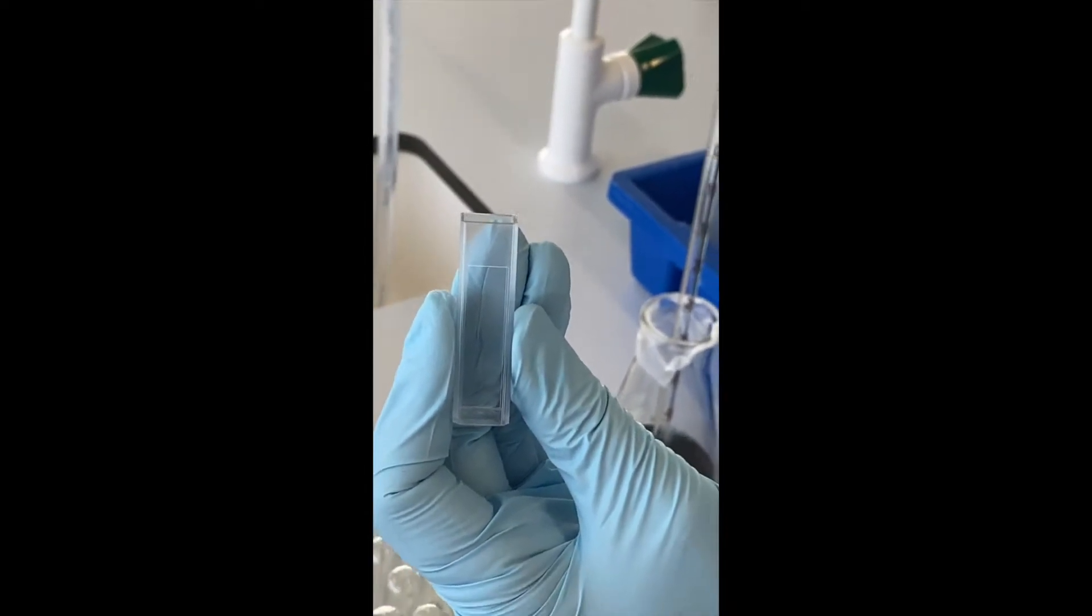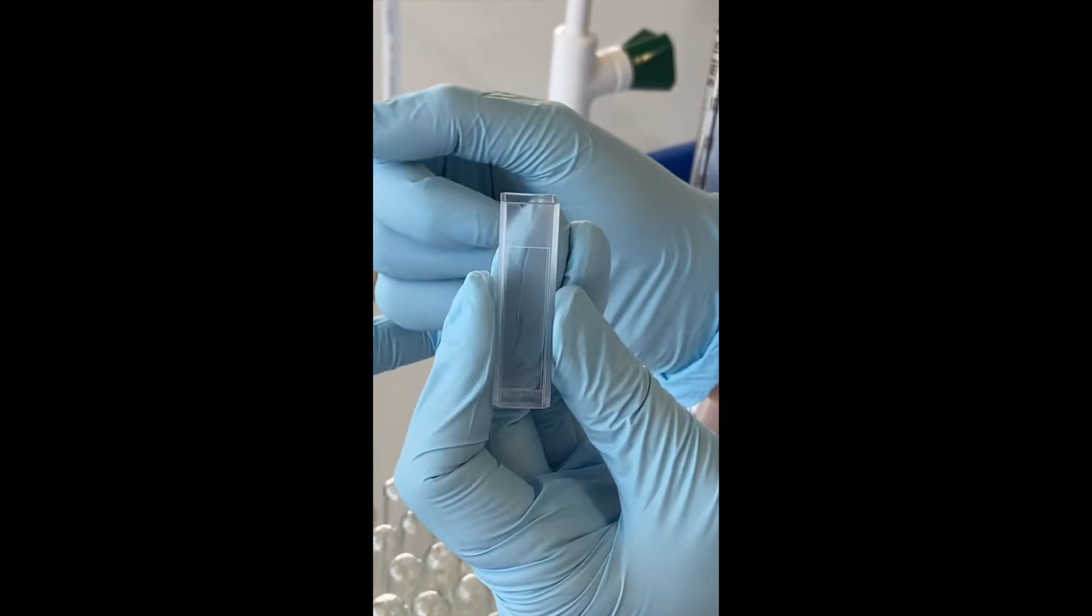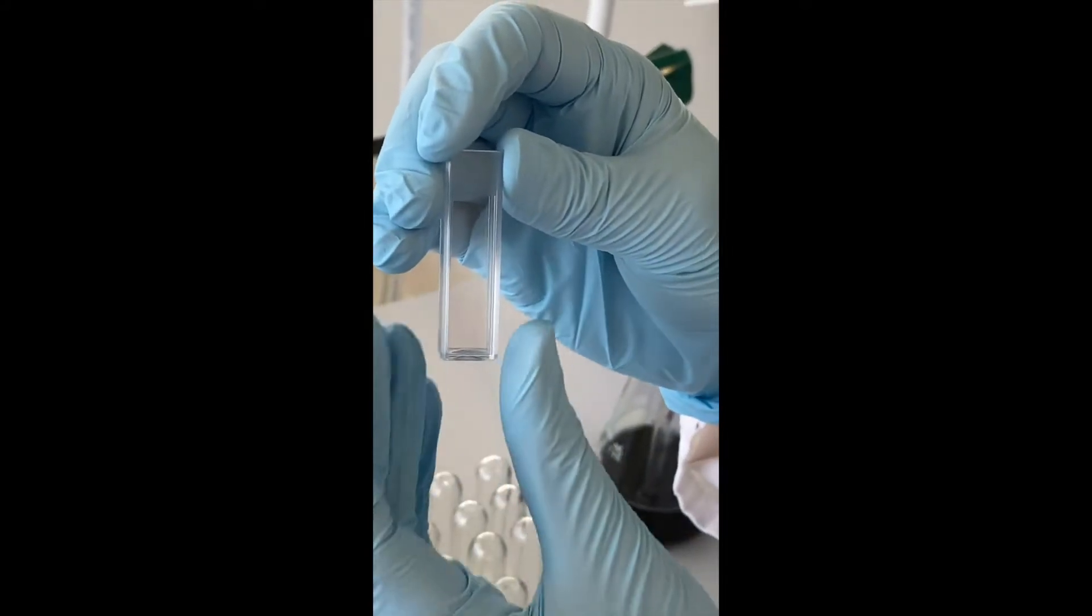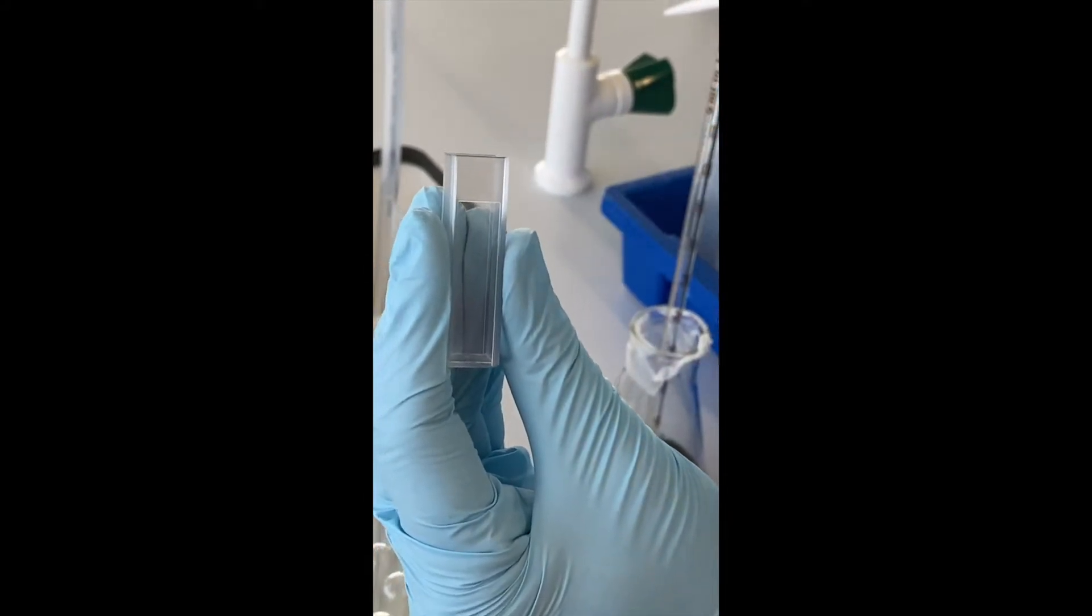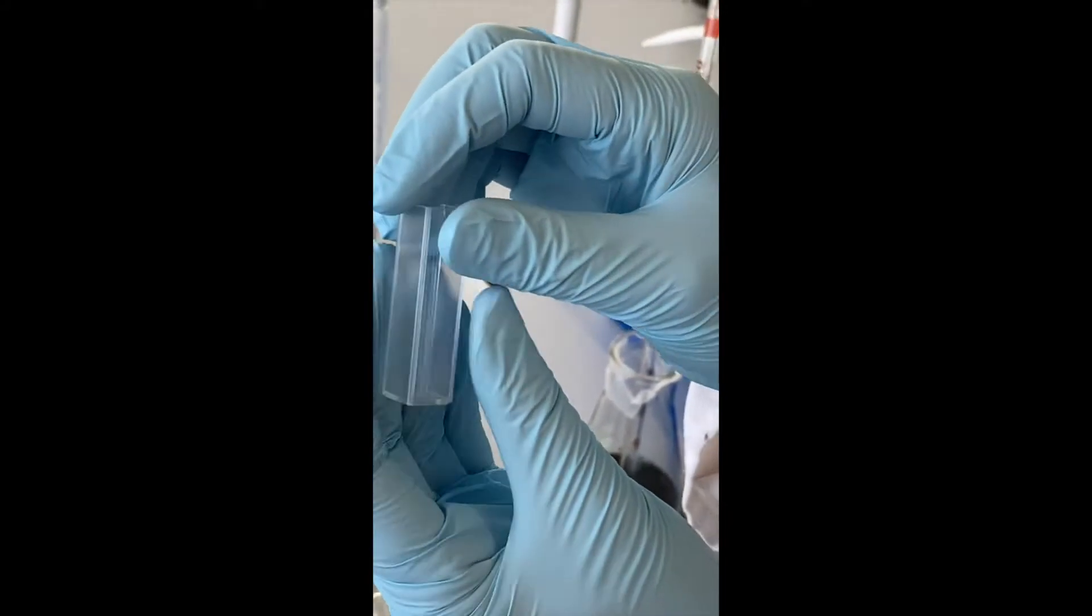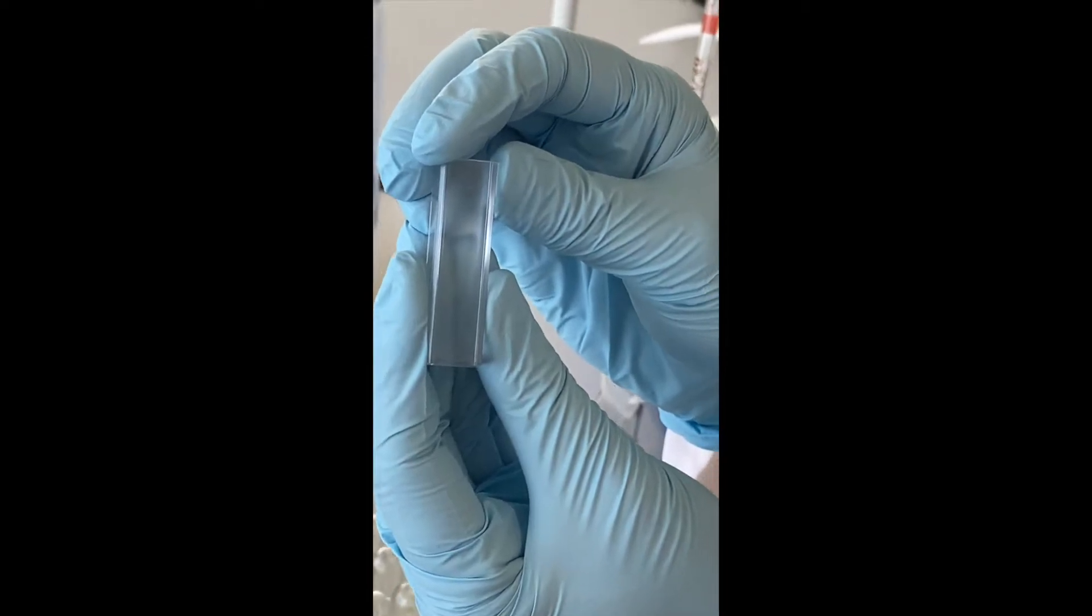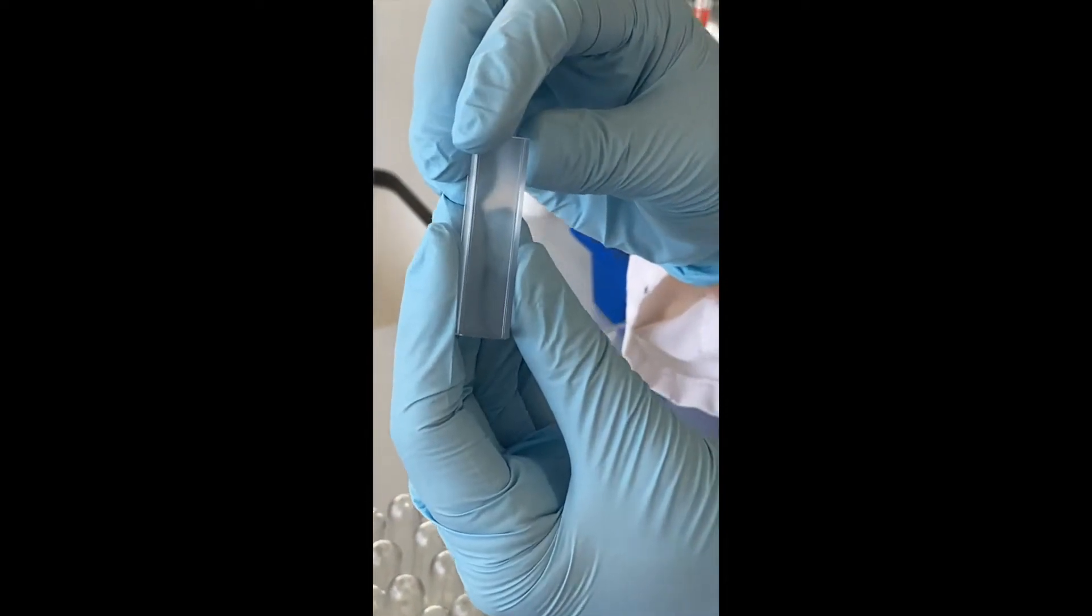The next thing to check is which direction you want to put this cuvette into your spectrophotometer. This end with the triangle on has a clear face on it. This wants to face in the direction of the light. The other end is clouded. That one does not because you will get no readings.